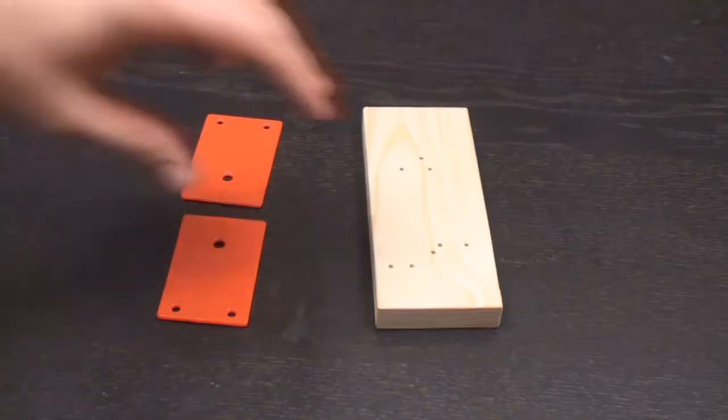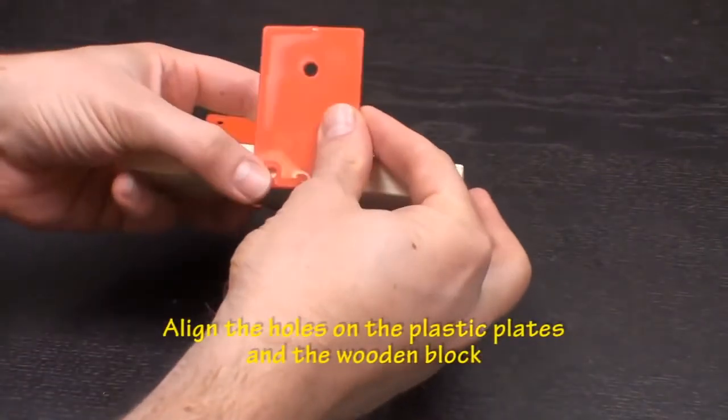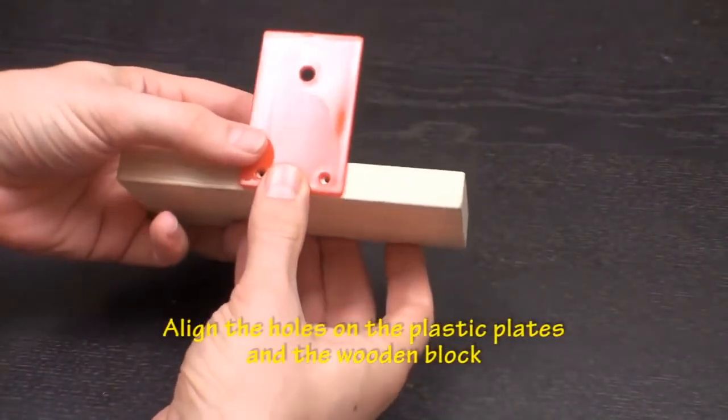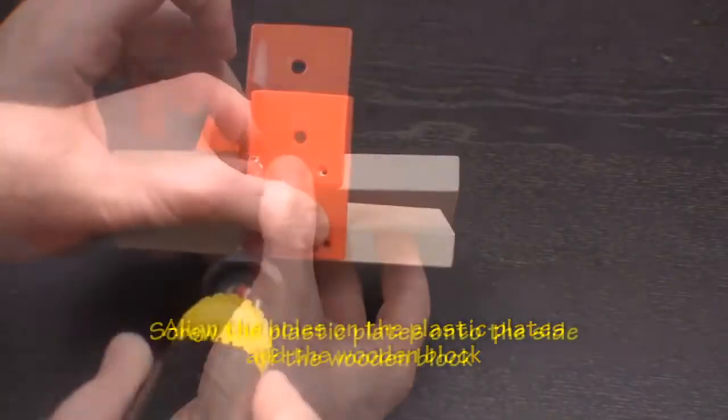To create the wire spool holder, you'll first need the wooden block and the plastic plates. Align the two holes at the bottom of the plastic plates with the holes in the side of the wooden block.